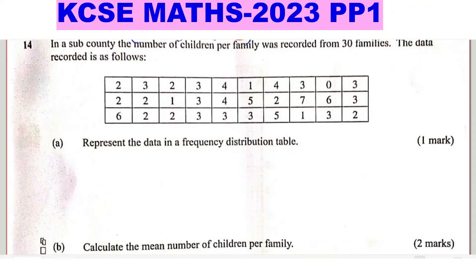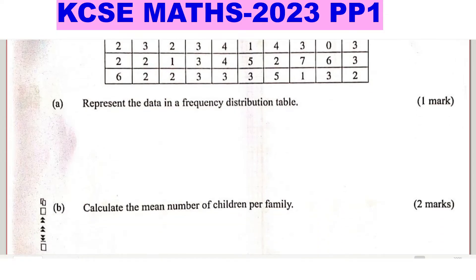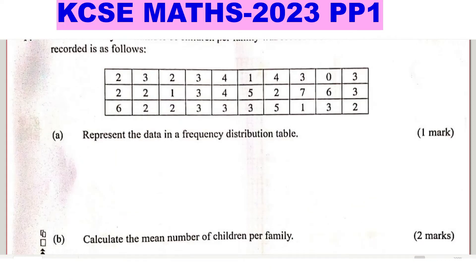Question 14. In a sub-county, the number of children per family was recorded from 30 families. The data is given in a table. Part A: represent the data in a frequency distribution table. Part B: calculate the mean number of children per family. We start by representing this data in a frequency distribution table.